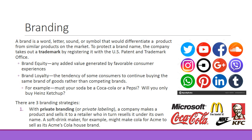Another thing that happens is branding. In this context we're looking at product or service branding — a word, letter, sound, or symbol that differentiates a product from similar products on the market. To protect a brand name, the company takes out a trademark by registering it with the U.S. Patent and Trademark Office. The idea is to build brand equity, meaning added value generated by favorable customer experiences. For example, you can go into a McDonald's in the middle of nowhere in Montana and still get the same Big Mac as in Philadelphia — that brand has been very consistent.